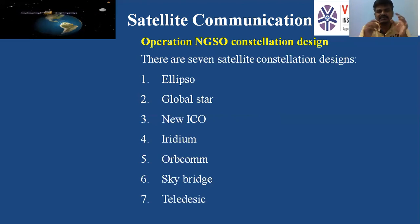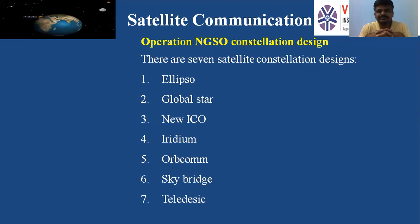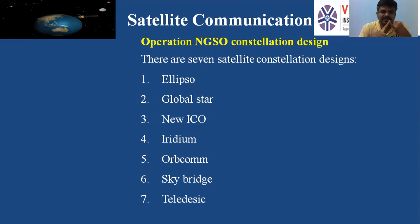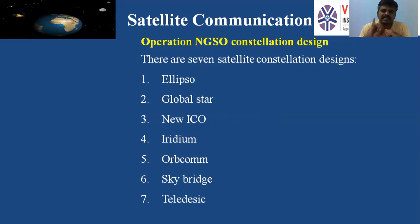There are many constellations in space, and countries have named them. Seven constellation designs are mentioned here: Ellipso, GlobalStar, New Echo, Iridium, OrbComm, SkyBridge, and Teledesic.